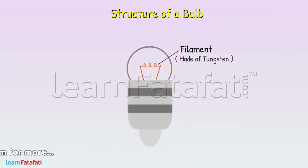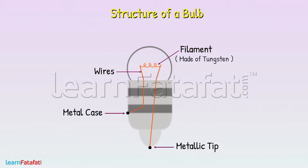The filament is supported by two thick wires. One of these wires is connected to the metallic tip located at the bottom of the bulb, and the other is connected to the metal case at the base of the bulb.